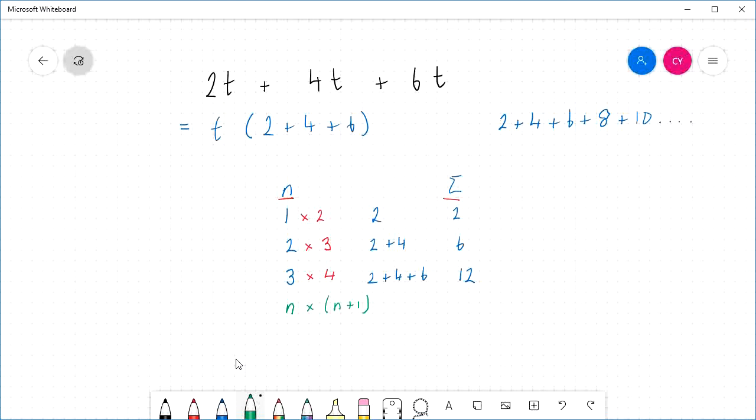So that set of brackets, 2 plus 4 plus 6 plus blah blah blah, works out to be n, where n is the number of terms I'm adding up, times n plus 1. That is going to make our lives much easier.